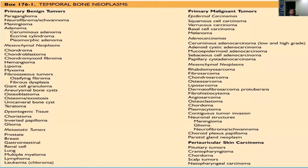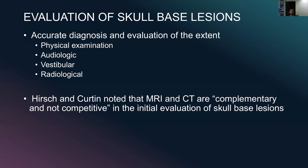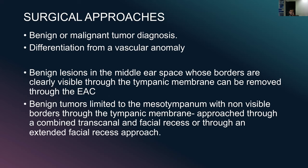We're going through a huge list of temporal bone neoplasms - the most important and commonly encountered ones. Before that, how do you evaluate skull-based lesions? An accurate diagnosis and evaluation of the extent is very important and can be done by a thorough physical examination, audiological examination, vestibular and radiological examination. Hirsch and Curtin noted that MRI and CT are complementary and not competitive in the initial evaluation of skull-based lesions. CT shows the bony involvement and MRI mainly shows the soft tissue involvement. Surgical approach depends on whether the lesion is benign or malignant and it is also important to differentiate from vascular anomalies.